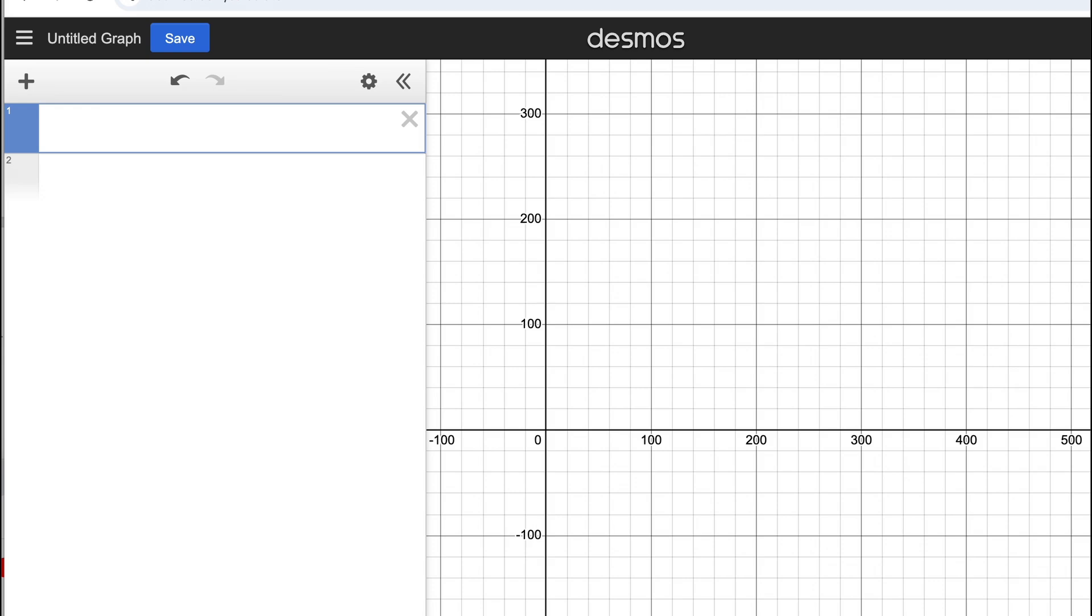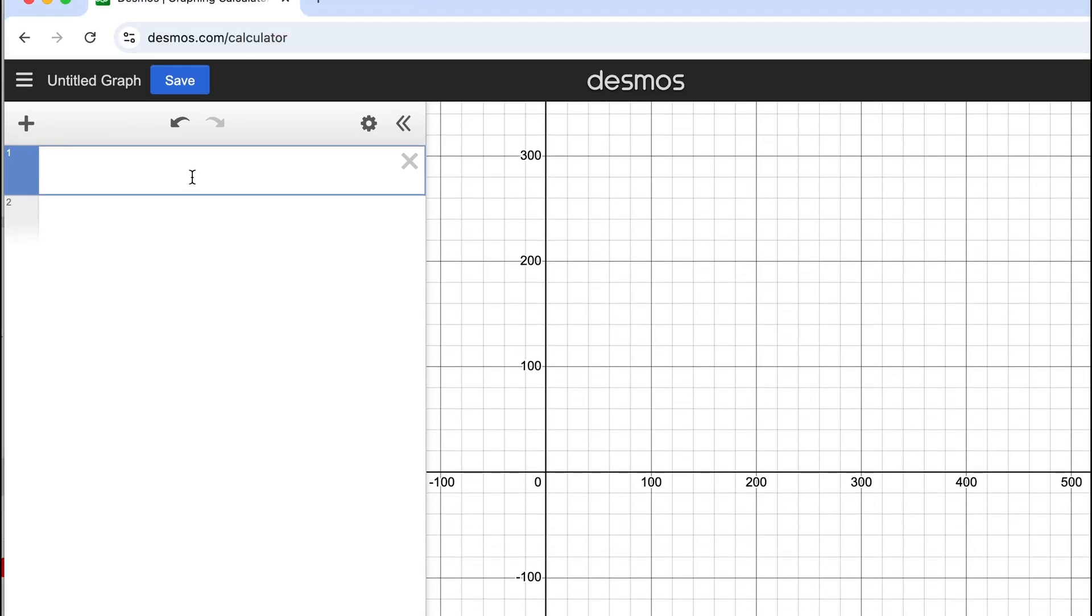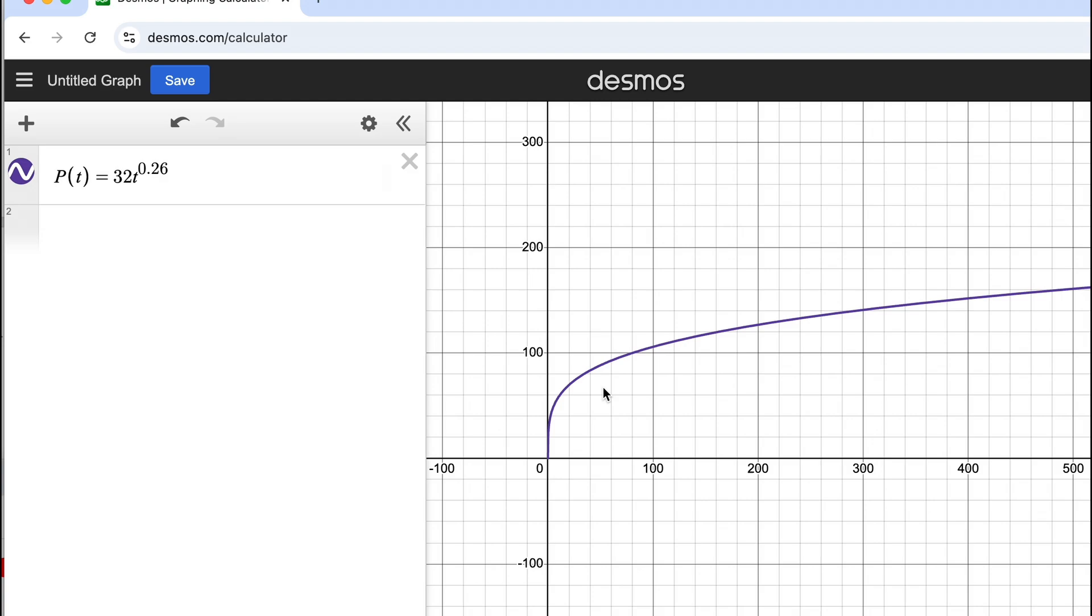If we look at a graph of that function, we can go to desmos.com and type in the original function. We see that it's a sort of square root-looking function. And now we're going to find an inverse to it.